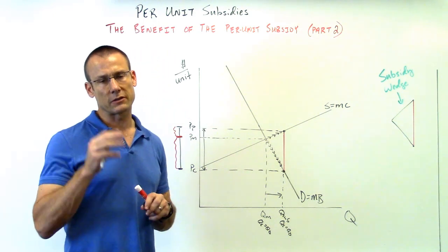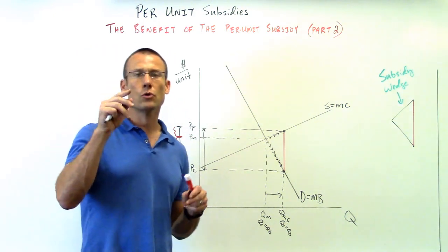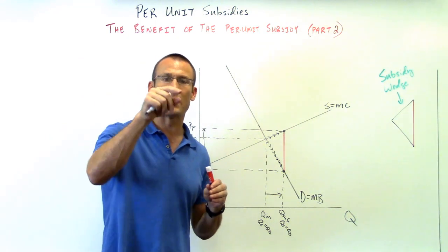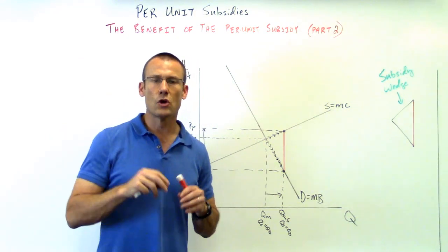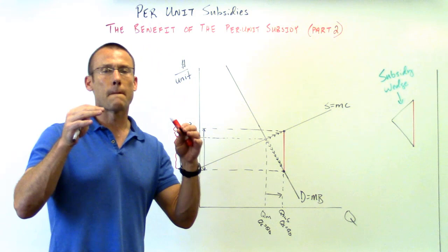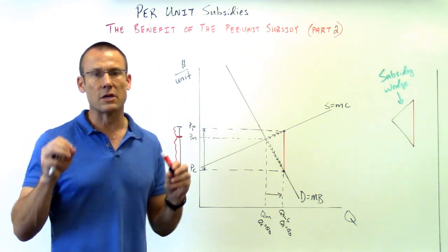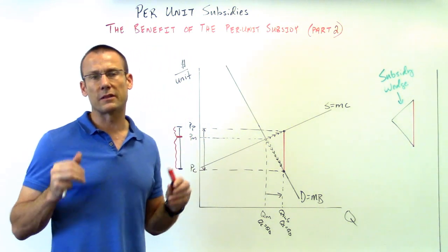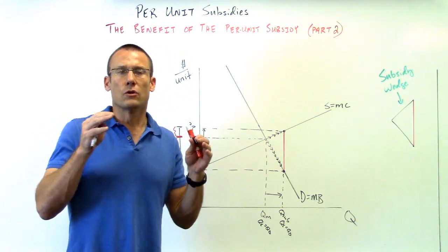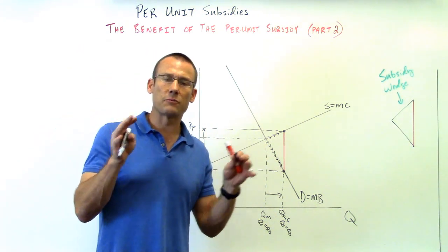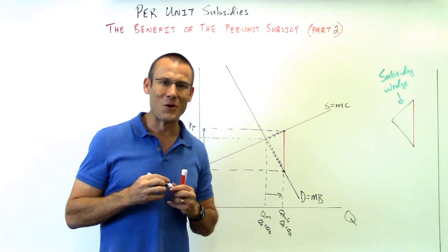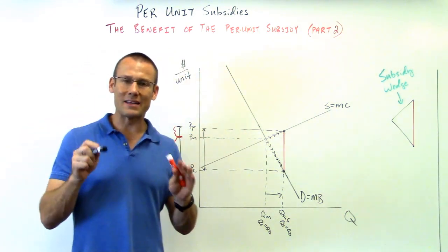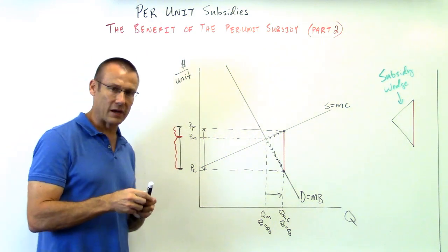Let's go back to per unit taxes for a second. Who took on the bigger burden of the per unit tax? The one that was more inelastic — less responsive to price. Who gets the bigger benefit when it comes to subsidies? The one that is more inelastic. It's inelastic both ways — they're going to get the bigger benefit — the one who doesn't respond to the price change as much as the other market participant.